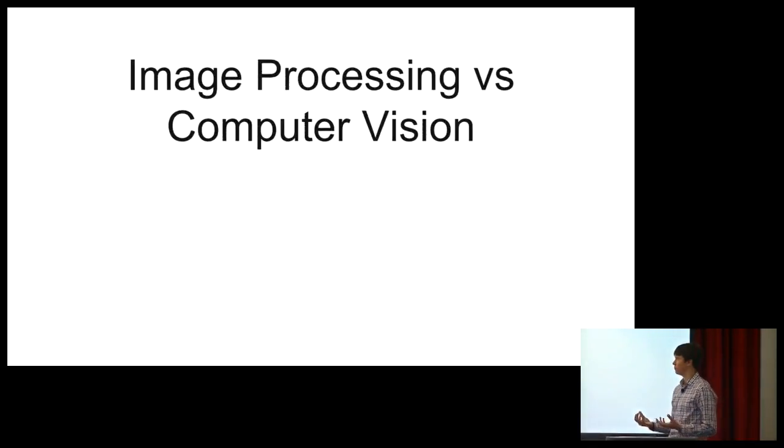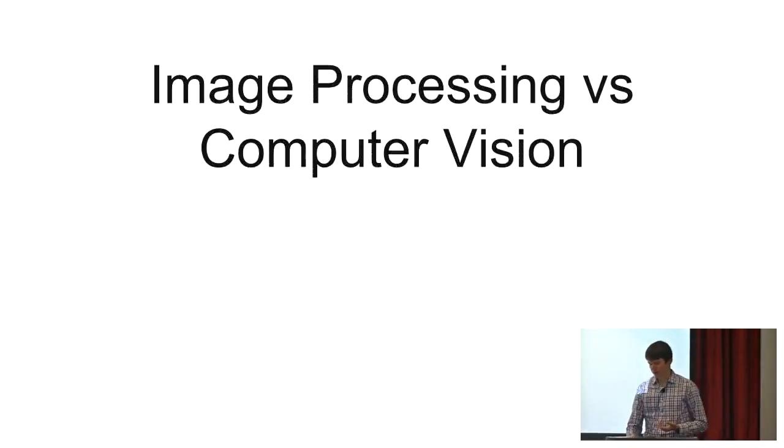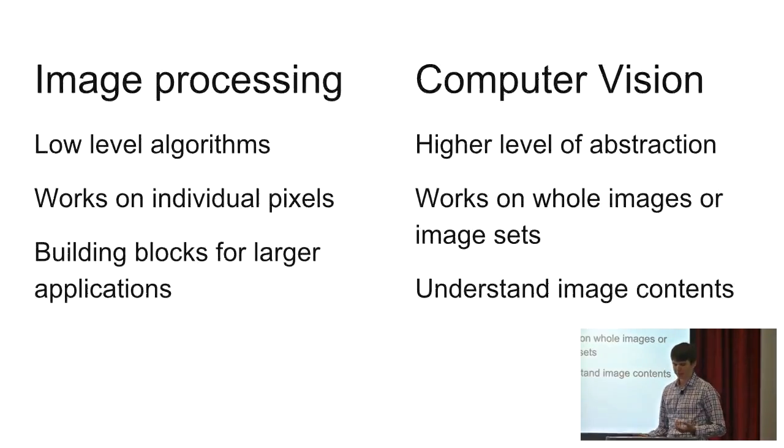Now to explain what I meant by image processing versus computer vision. If you talk to ten different people, you're probably going to get ten different answers. There's no hard definition. But for the purposes of this talk, when I say image processing, I mean something operating on a low level, versus computer vision, you want to get more intelligence about what's in that image or photo. Image processing algorithms usually are working on a pixel-by-pixel basis. In computer vision, you're more concerned with an image holistically.